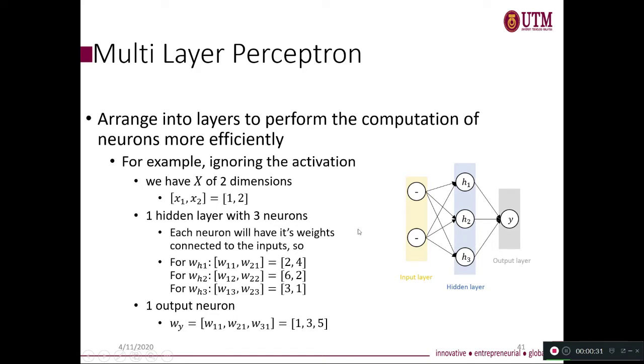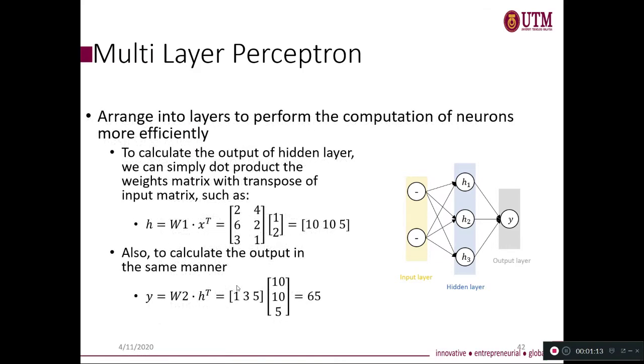And then again, this one later, we will discuss again later about how to arrange the matrix there. Because again, how to label this one. I will have some example on how to label this one in a meaningful way so then you can identify which W is referred to which network lines there. Because later, we need to make sure that we can have a meaningful notation there or labels there so then you are not lost at the deep architectures.